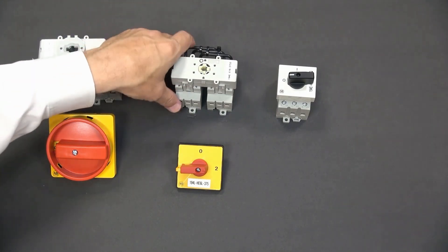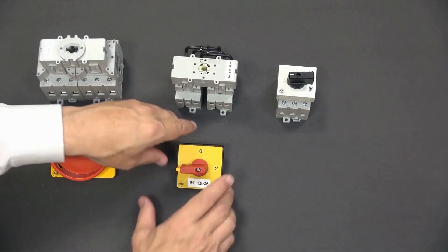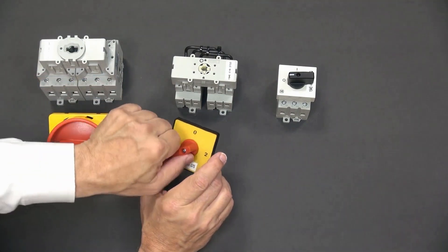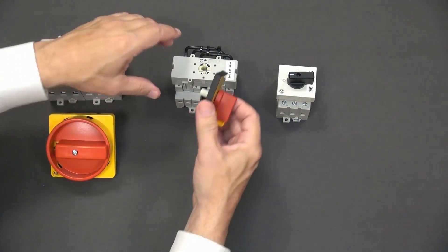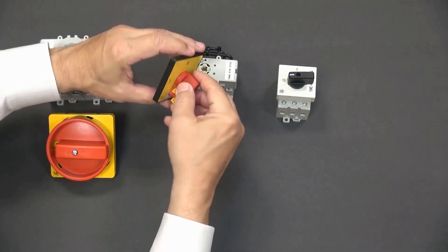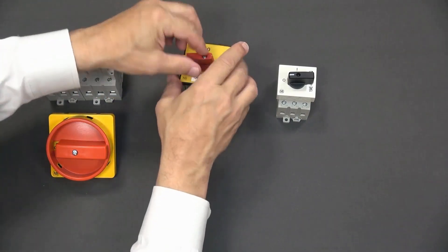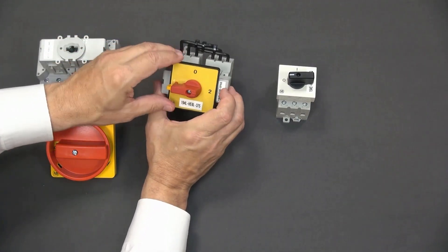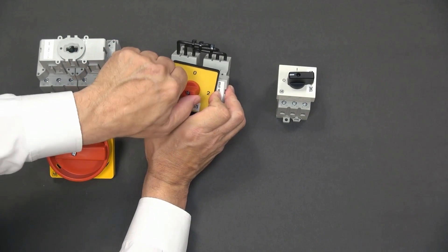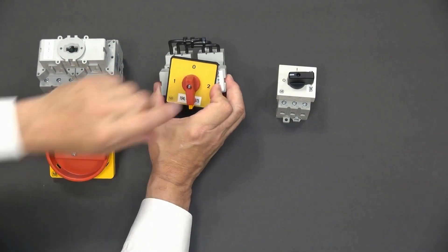This is a 16 amp door or front mounted changeover switch. Its function is to manually change between two electrical loads. This is a size 6 handle. Here we're switching from circuit 2 to off, then to circuit 1.